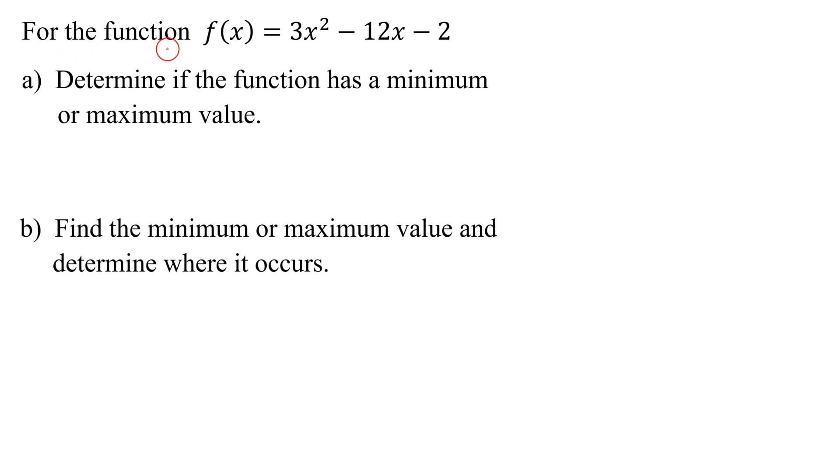In this problem, we're given the function f of x equals 3x squared minus 12x minus 2. What type of function are we given here? If you notice, the highest exponent on an x is a 2. That means I have a quadratic function, and when I graph it, I'm either going to get a parabola that opens up or down.